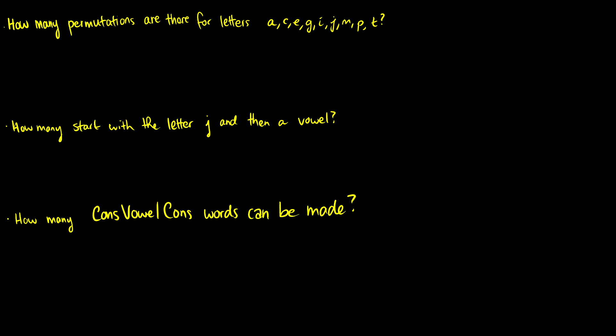First question: how many permutations are there for the letters A, C, E, G, I, J, M, P, T? So we have 1, 2, 3, 4, 5, 6, 7, 8, 9 letters.